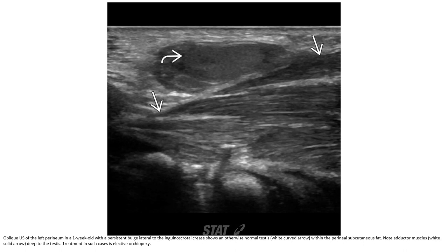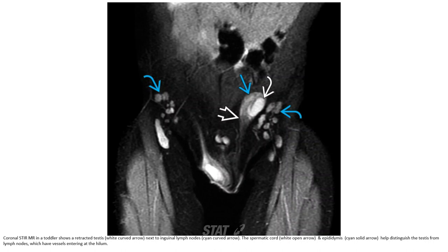The treatment in such cases is selective orchiopexy. The spermatic cord and epididymis help to distinguish the testis from lymph nodes, which have vessels entering at the hilum.